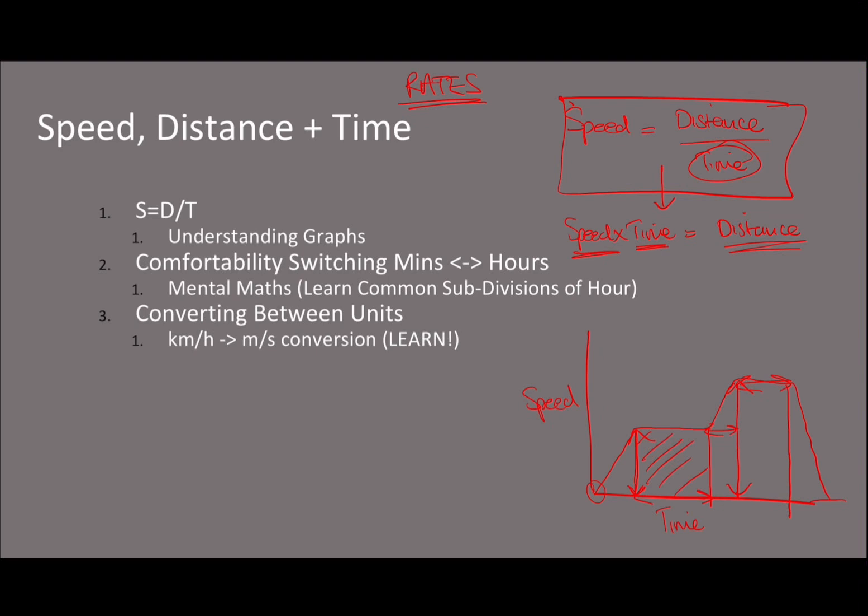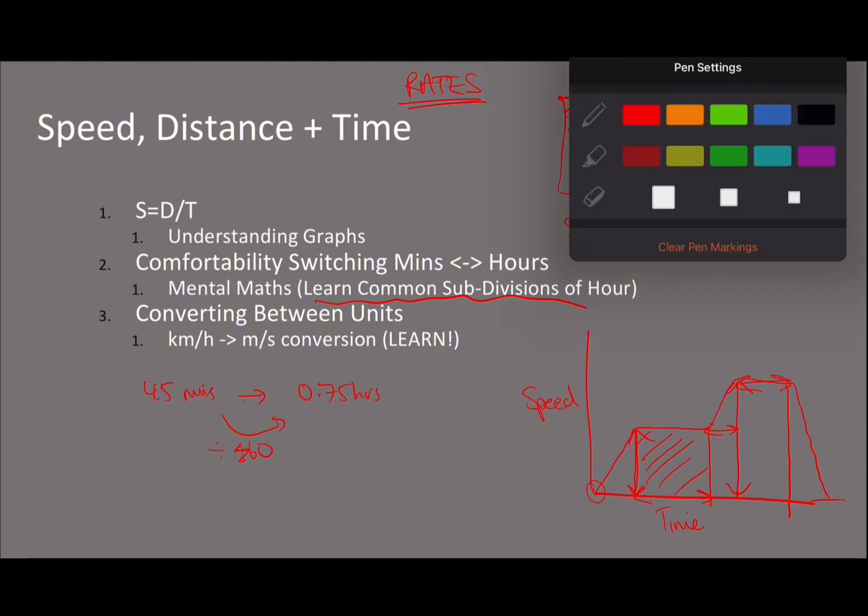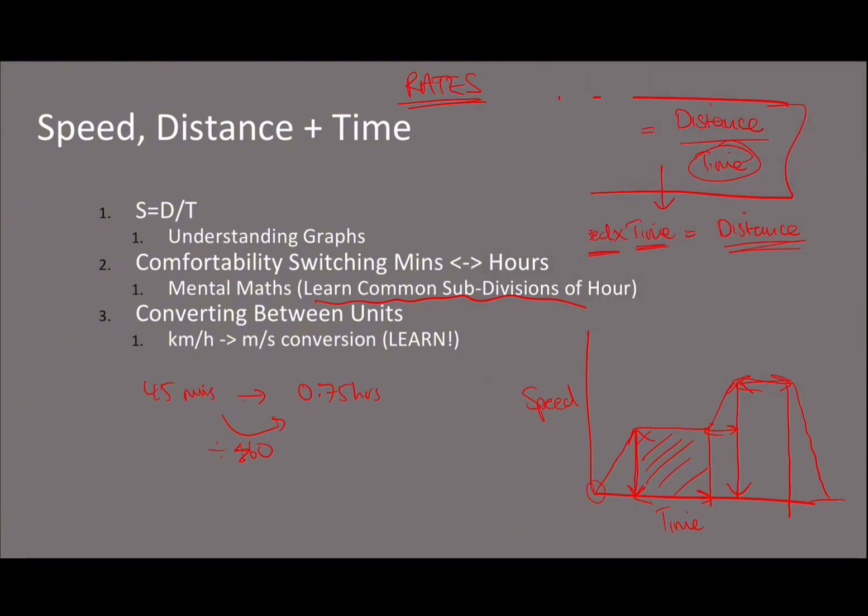The next really important thing for speed, distance, and time is being comfortable switching between different units. The common one is minutes and hours. I know you know that to go from 45 minutes to hours, you divide by 60, which is 0.75. But it's important to do this as fast as possible, so learn the common subdivisions of an hour.